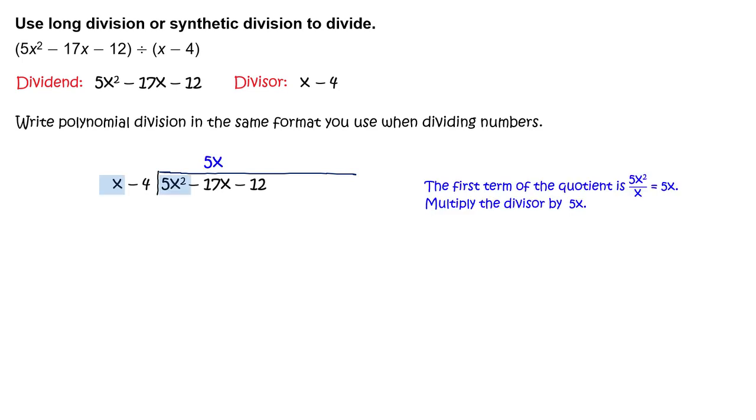The first term of the quotient is 5x squared divided by x which equals 5x. Multiply the divisor by 5x to get 5x squared minus 20x.